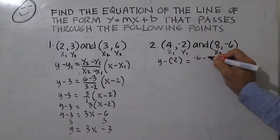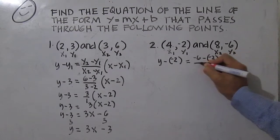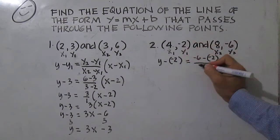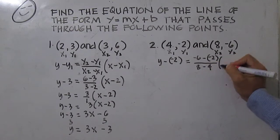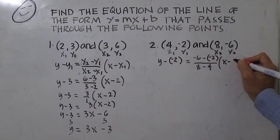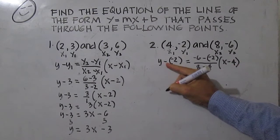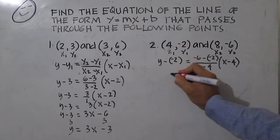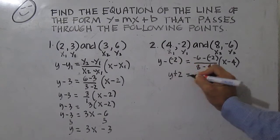Y sub two is negative six minus negative two, over eight minus four, times x minus four.